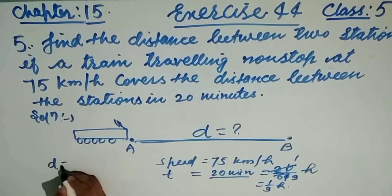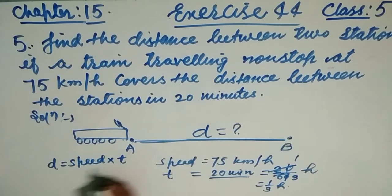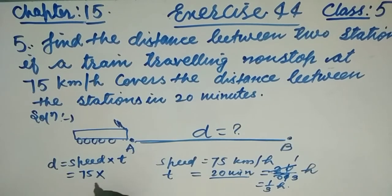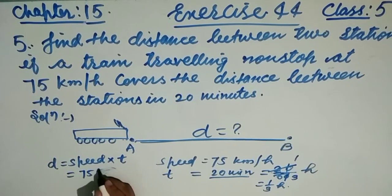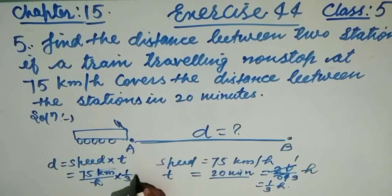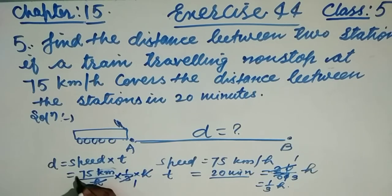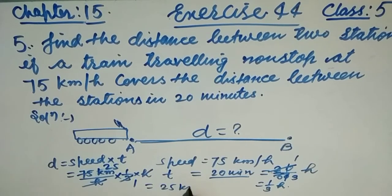Now, distance equals speed multiplied by time. Speed is 75 kilometers per hour, and time is 1/3 hour. So distance = 75 × 1/3. The 3 cancels with 75 to give 25. Therefore, the distance is 25 kilometers. That is the answer.